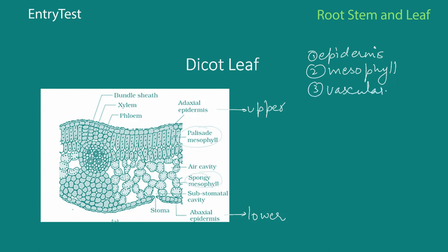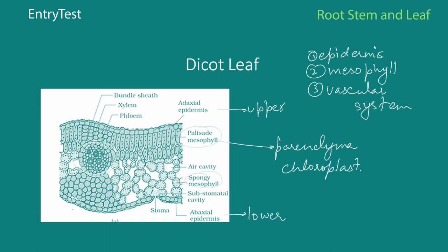The third layer is the vascular system made up of xylem and phloem, with a bundle sheath present outside the vascular bundle. From top to bottom you have: adaxial epidermis, palisade mesophyll, spongy mesophyll with air cavities, the substomatal cavity, and finally the abaxial epidermis. The mesophyll is generally composed of parenchyma cells that contain chloroplasts for photosynthesis. Vascular bundles are found in the veins and midrib, surrounded by bundle sheath cells.